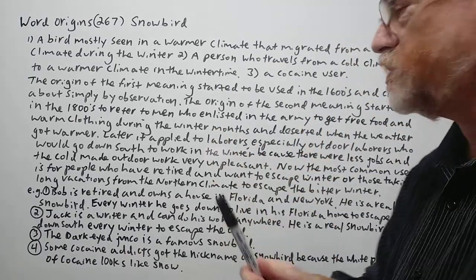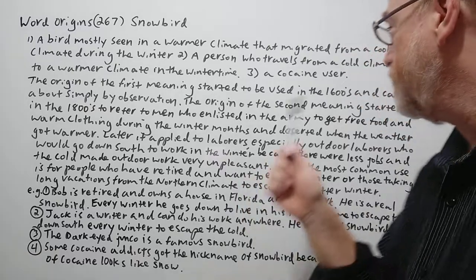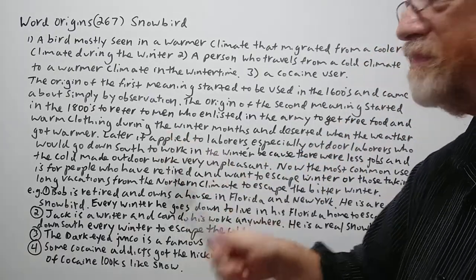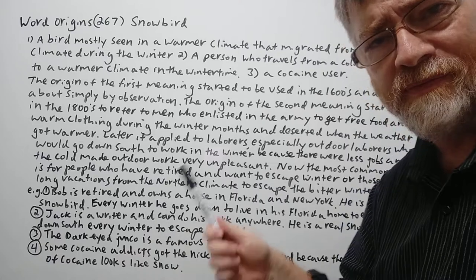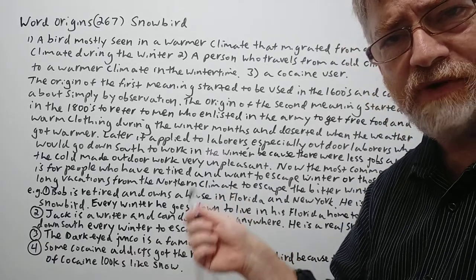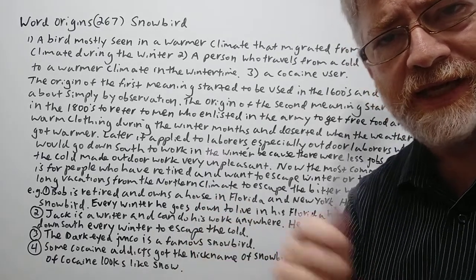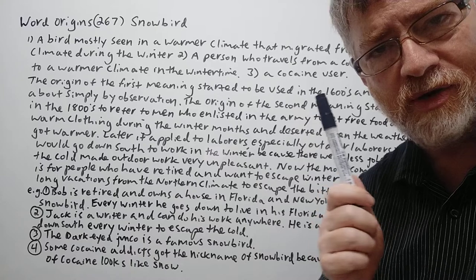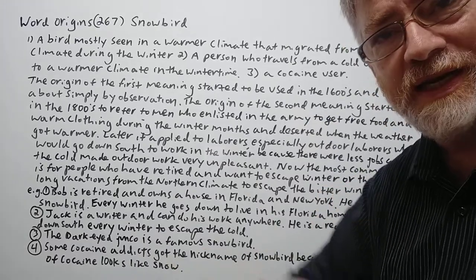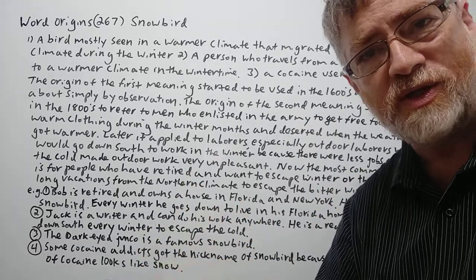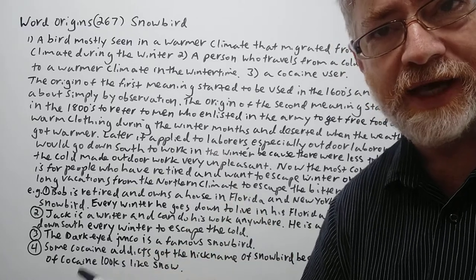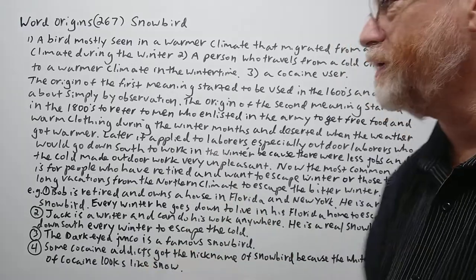The origin of the first meaning started to be used in the 1600s and came about simply by observation. People noticed that they had recognized a bird from the northern climate — they only see it in the warmer climate during the winter, then it disappears and goes back north again when the weather gets warmer. So they called that sort of bird a snowbird.